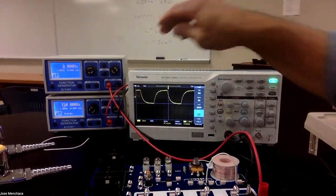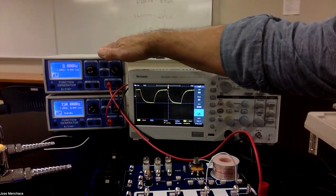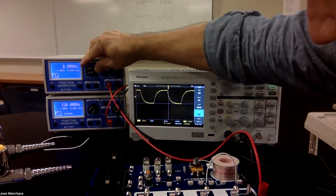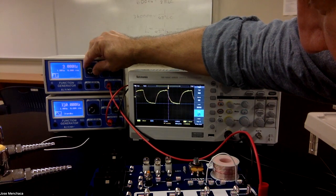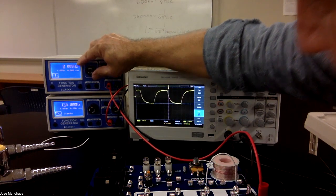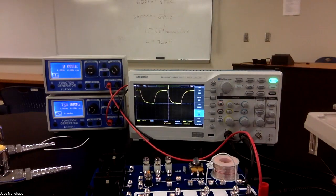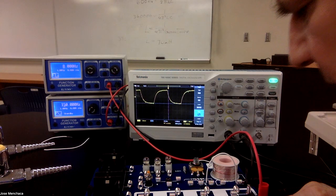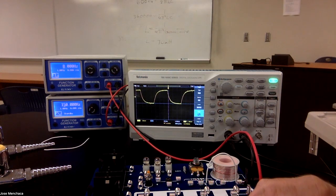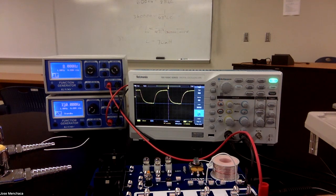I'm using the top function generator. It's set for 8 hertz. If I adjust it, you can see that indeed it adjusts the waveform. I've got a 10k ohm resistor and a 10 microfarad capacitor.